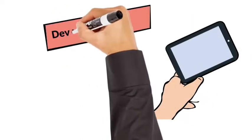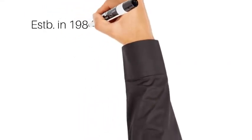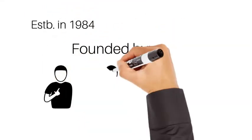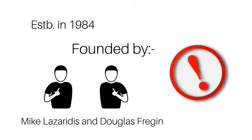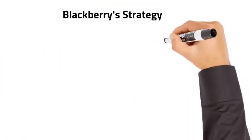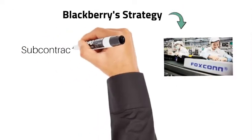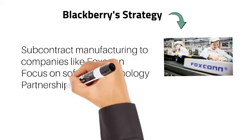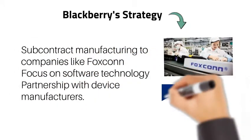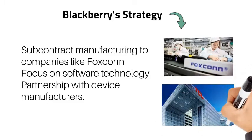BlackBerry was established in 1984 as Research in Motion, or RIM, and it was founded by Mike Lazaridis and Douglas Fregin. BlackBerry's original strategy was to subcontract manufacturing to other companies like Foxconn and it focused on software technology. Currently, BlackBerry's strategy is to focus on forming partnerships with device manufacturers such as TCL Communication and consolidating BlackBerry's software portfolio.